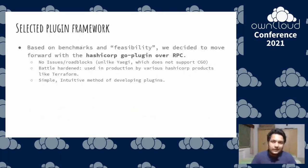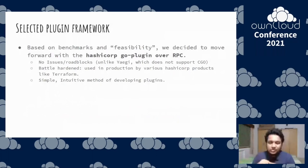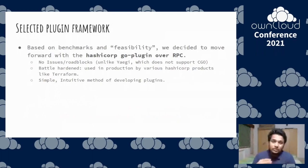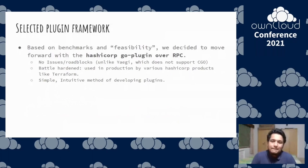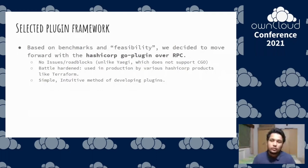After a lot of discussions with the community, reviews, looking at the benchmark numbers and feasibility, we decided to move forward with HashiCorp Go plugin over RPC. RPC gave slightly faster performance than gRPC. The reason we selected this was it had no issues or roadblocks, and it's used in production by HashiCorp products like Terraform, Packer, and Vault — all of them use this plugin framework. So we already have a solid proof of concept.